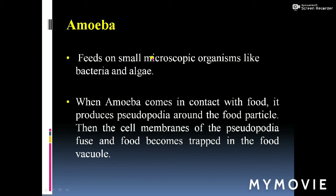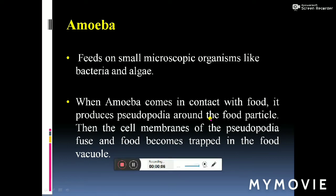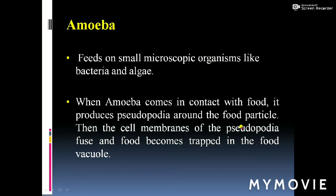Amoeba feeds on small microscopic organisms like bacteria and algae, both of which are found in water. When amoeba comes in contact with food, it produces pseudopodia around the food particle. The cell membranes of the pseudopodia fuse and the food becomes trapped in the food vacuole, as you have just seen in the video.